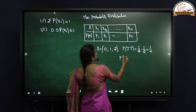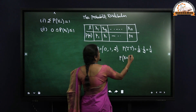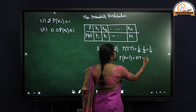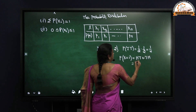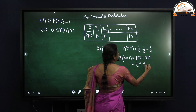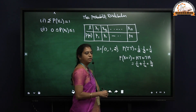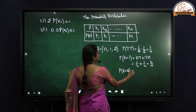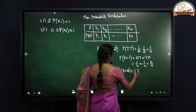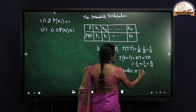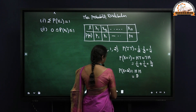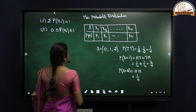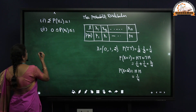Similarly, probability of X = 1, that is when one head occurs, is given by two possibilities: head-tail plus tail-head. This is 1/4 + 1/4 = 2/4. Then probability of X = 2, that is when two heads occur, is again 1/4. Now we write down the probability distribution for this example.